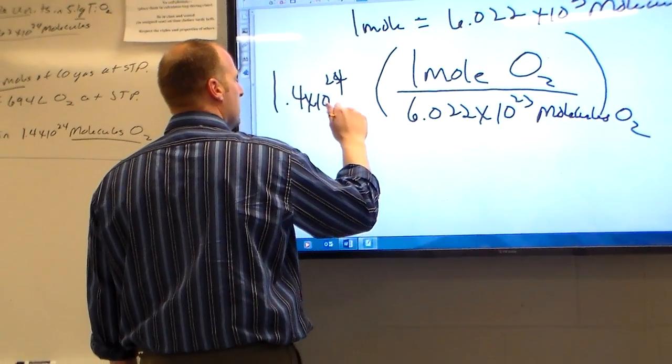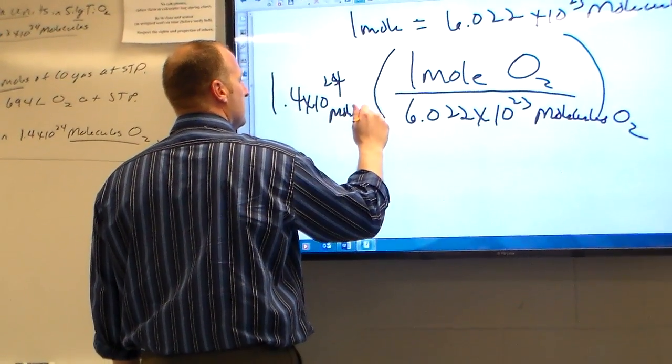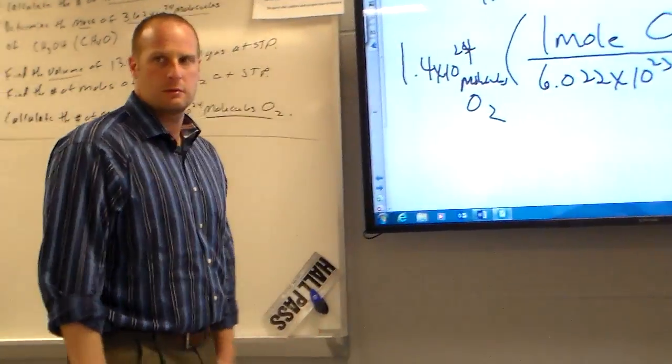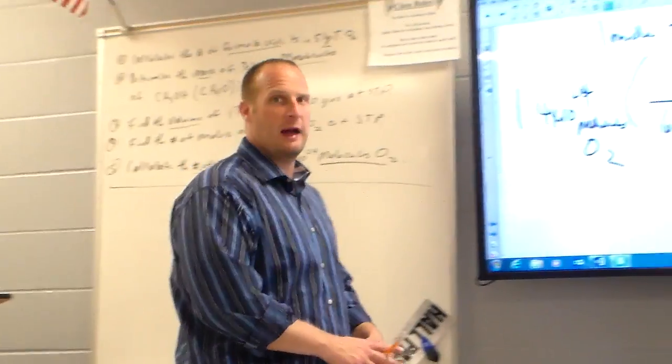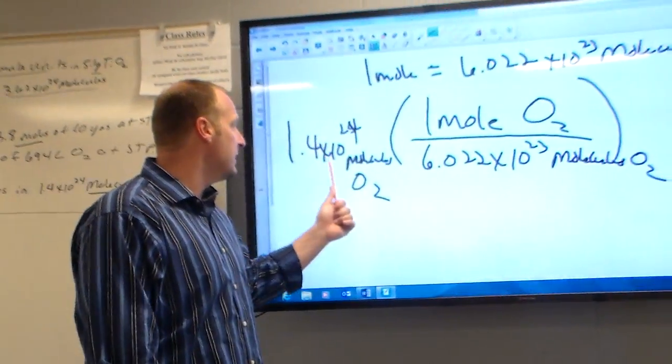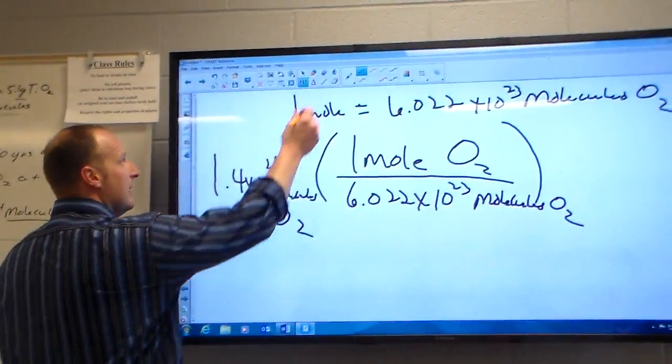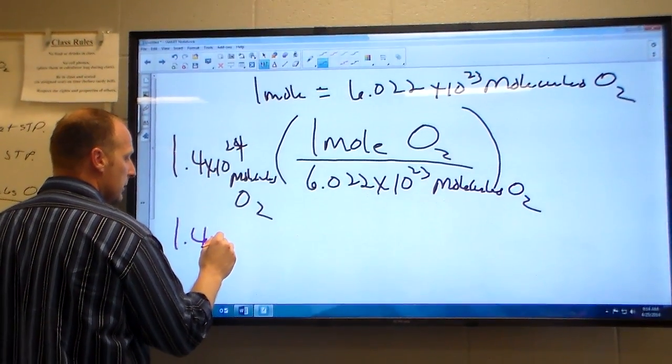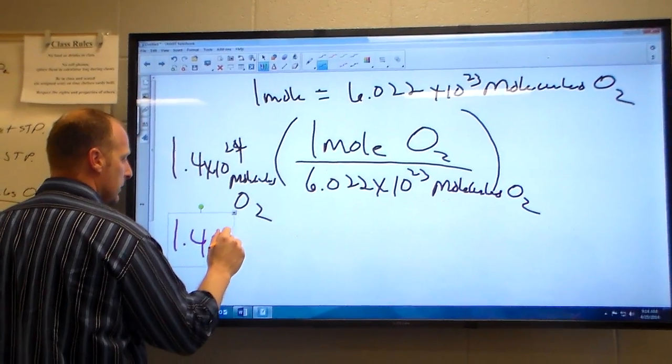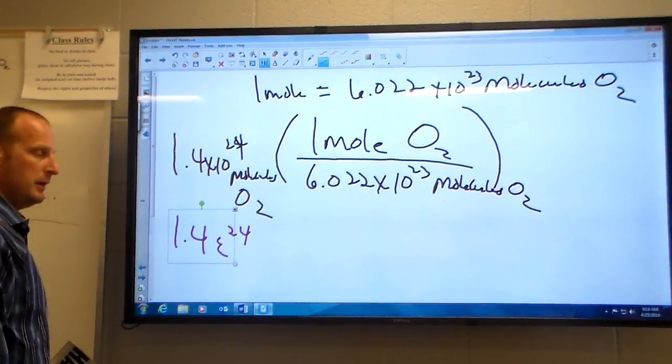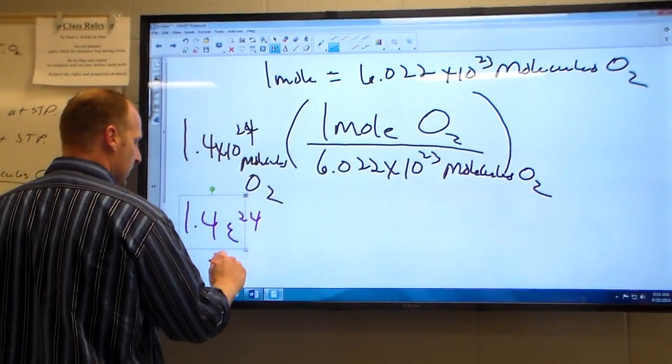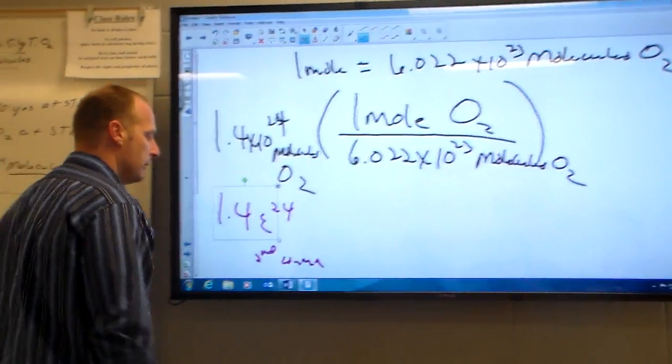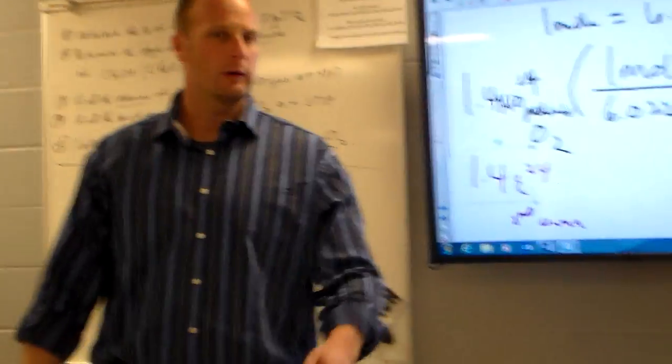Where did we have the problem yesterday? Do you remember? It's the calculator. Yeah. This is, when I write this number out on the calculator, for those that were not here yesterday, it's 1.4 E 24. And that number is usually 2nd comma on the TI-82-83s. Okay? That's it. We're good to go.